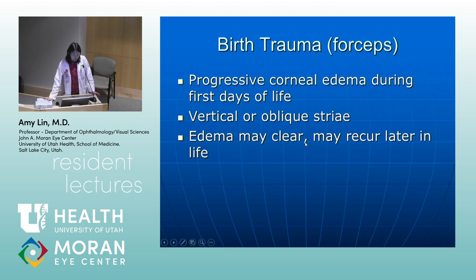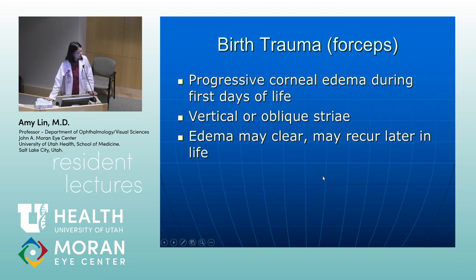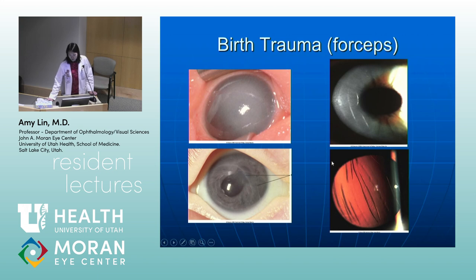Birth trauma can look similar with regards to the striae. With birth trauma, you'll see progressive corneal edema during the first few days of life, and you'll see typically vertical or oblique striae rather than horizontal striae. Edema may clear later but can recur later in life. Here are pictures of birth trauma showing diffuse edema and oblique to vertical striae, also seen on retro-illumination.